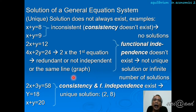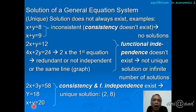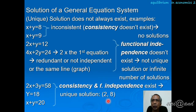As a conclusion, when both consistency and functional independence exist — for example, 2x plus 3y equals 58, y equals 18, and x plus y equals 20 — a unique solution can be found from the model.